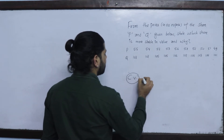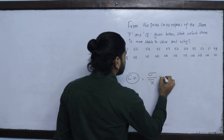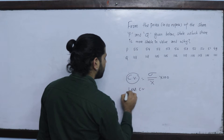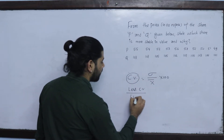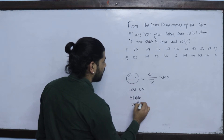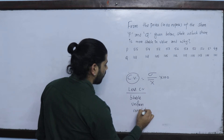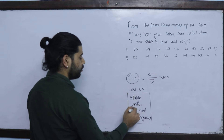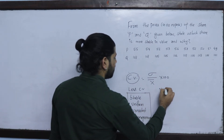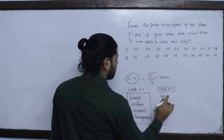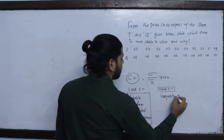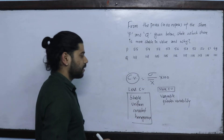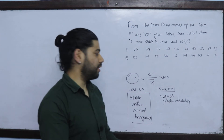We will test using CV. The CV formula is: CV = (Standard Deviation / Mean) × 100%. If CV is less, then the data is more stable, uniform, consistent, and homogeneous. Less CV means more stable, more uniform, more consistent, and more homogeneous.